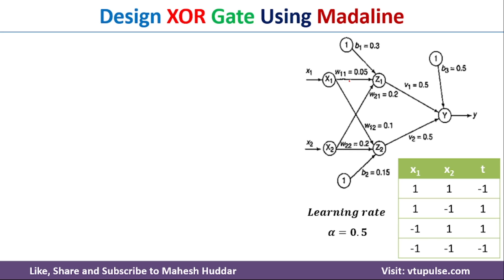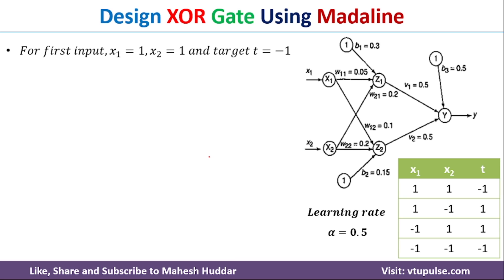The network is shown with its initial parameters. I will assume the learning rate as 0.5. This is the XOR truth table — X1 and X2 are the two inputs and T is the target. I will start with the first input: X1 = 1 and X2 = 1, and the target is equal to minus 1.